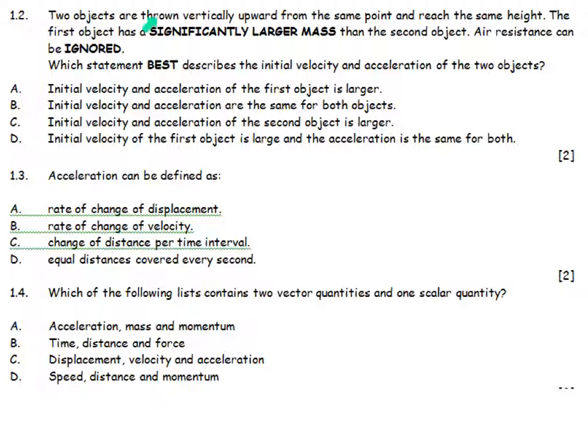Two objects are thrown vertically upward from the same point and they reach the same height. The first object has a significantly larger mass than the second object. Air resistance can be ignored. Which statement best describes the initial velocity and the acceleration of the two objects? They are in free fall and mass makes absolutely no difference. So the acceleration, the displacement, the final velocity, the initial velocity, if you look at all the equations of motion, none of that depends on mass.